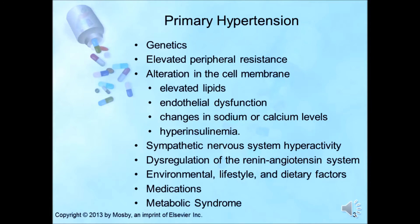Dysregulation of the renin-angiotensin system leads to hypertension, although this does not appear to be a major factor in the origin of hypertension. African Americans with hypertension and older adult patients tend to have lower plasma renin activity. Approximately 10% of hypertensive individuals have high levels, 60% have normal, and 30% have low renin levels. Some patients have decreased ability to excrete sodium, which leads to increased blood volume and increased blood pressure — sodium restriction may be necessary in these individuals. Abnormalities in sodium transport mechanisms lead to an increased level of intracellular sodium in the blood cells, which may result in increased vascular smooth muscle tone often seen in hypertension.